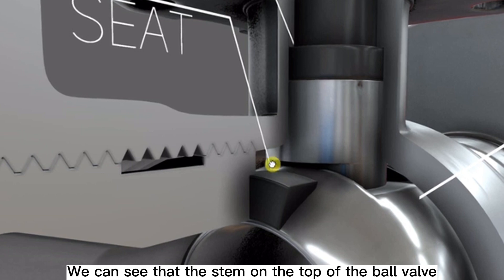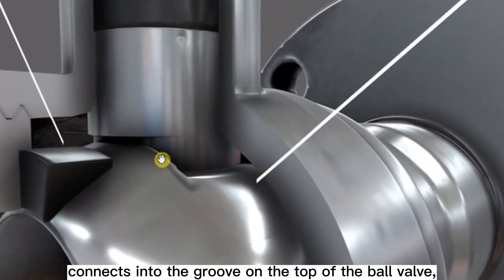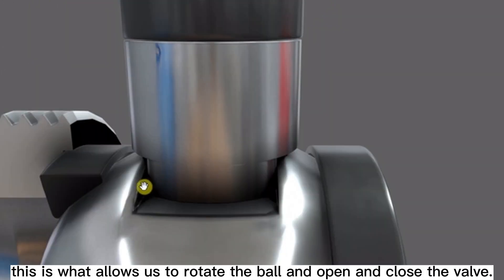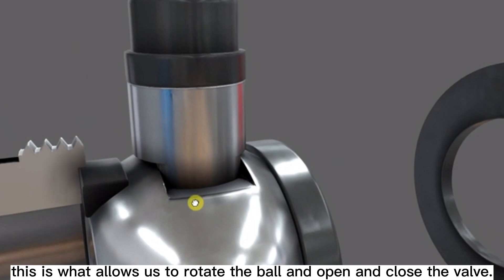We can see that the stem on the top of the ball valve connects into the groove on the top of the ball valve. This is what allows us to rotate the ball and open and close the valve.